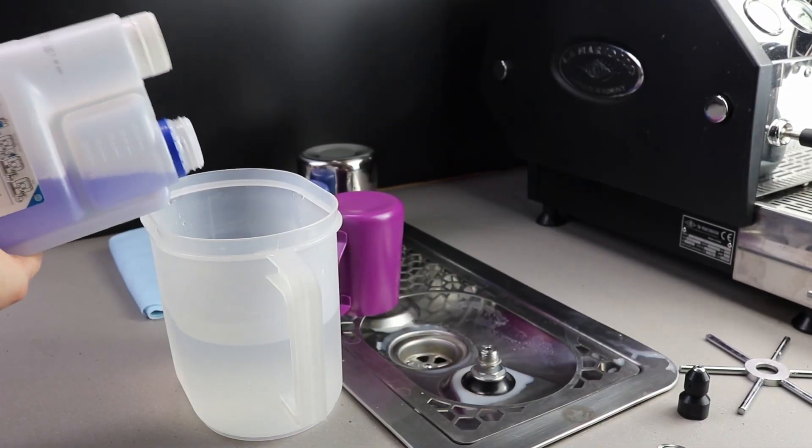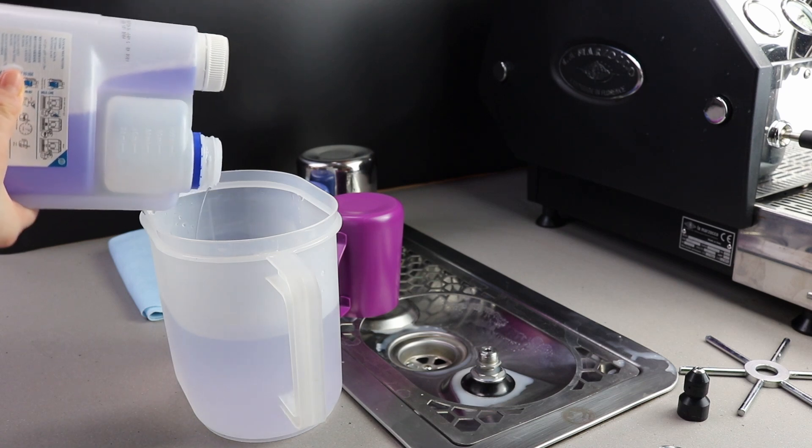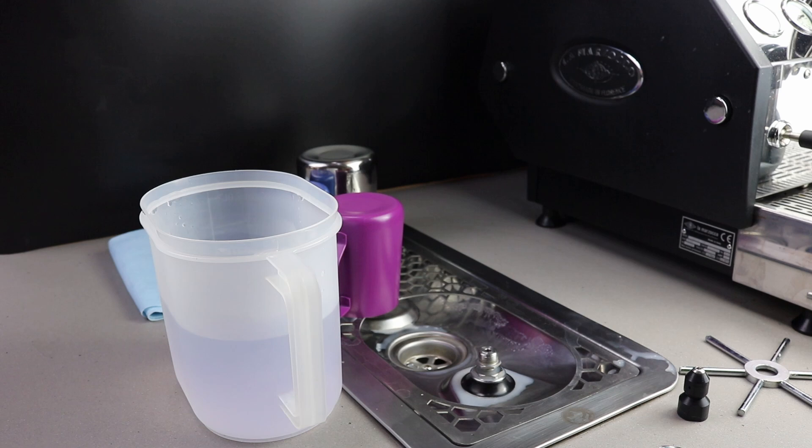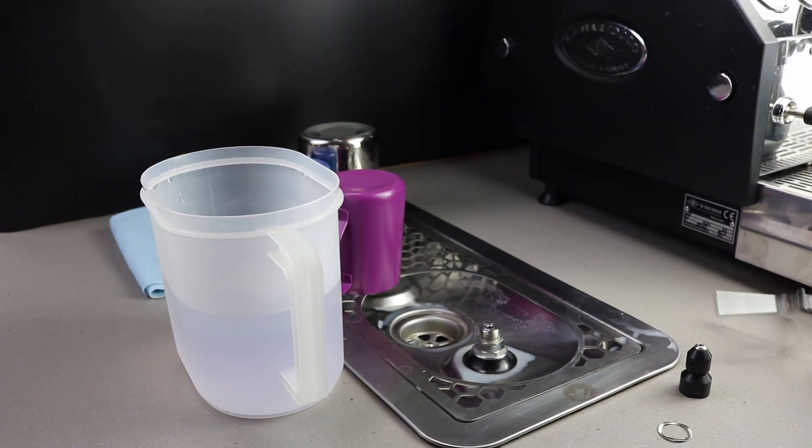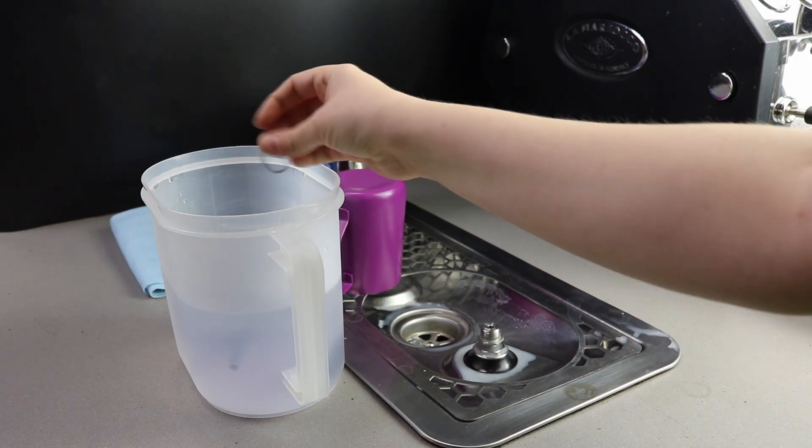In your jug, dilute 50ml of caffetto milk frother cleaner into 1 litre of hot water. Place the spin jet, star, and wobble washer into your diluted solution. Let these soak for approximately 10 minutes.